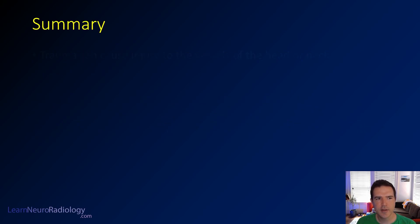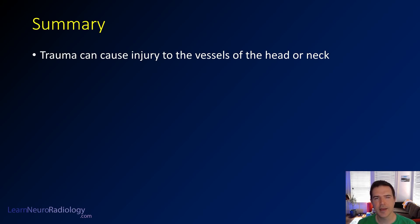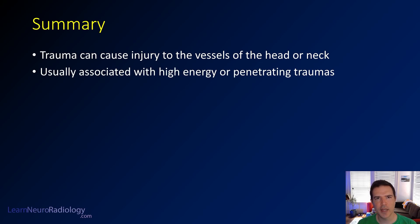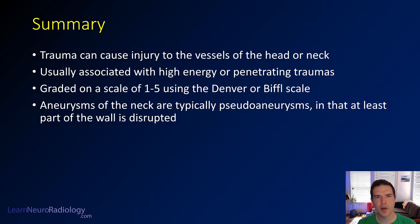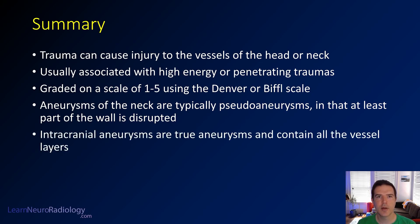In summary for this case: trauma can cause injury to the vessels of the head and neck. Here it must have been a pretty severe trauma because almost all vessels are injured, with associated fractures indicating high-energy or penetrating trauma — such as stab wounds or gunshot injuries to the neck. These injuries are graded on a scale of one to five using the Denver or Biffle scale, ranging from slight narrowing up to pseudoaneurysm or active extravasation. Aneurysms in the neck are pseudoaneurysms where part of the wall is disrupted, whereas aneurysms in the brain are usually true aneurysms with smooth stretching of all vessel wall layers.